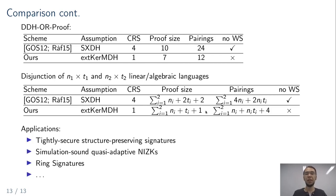Applications of our new OR proof include tightly secure structure-preserving signatures, simulation-sound quasi-adaptive NIZKs, ring signatures, and many more. For many of these, the OR proof constitutes a large part of their size and computation, so by reducing its size we significantly improve those primitives. By assuming our new assumption we can greatly improve many cryptographic constructions—something at least worth considering. Thank you for your attention; I'll gladly answer questions at the panel discussion.